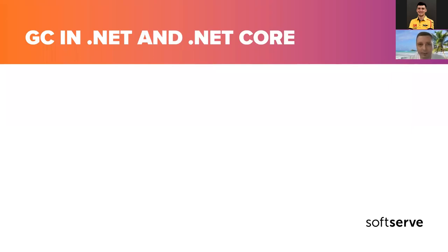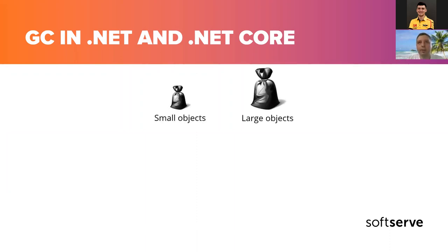Let's recap on how the garbage collector actually works. The .NET garbage collector manages the allocation and release of memory for your application. Each time you create a new object, the CLR allocates memory for the object from the managed heap. If address space is available, the runtime continues to allocate space for new objects. However, as we know, memory is not infinite — eventually the garbage collector must perform a collection to free some memory.